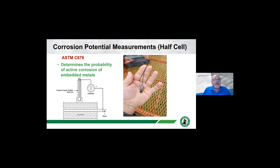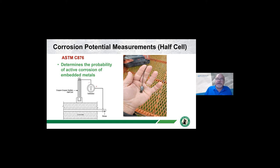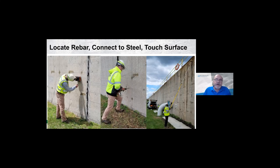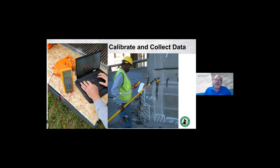I want to talk about corrosion potential measurements, often referred to as half-cell measurements—ASTM C876. We have to make a positive connection to the black steel, so we drill and chip and expose where the rebar is. In the image on the right is our positive connection with a wire to the rebar. Then we touch the surface of the concrete with a copper copper-sulfate half-cell sponge, which is a little bit wet. We lay out a grid system—maybe two feet by two feet. The process: locate the rebar with GPR, drill to the steel to make a connection without damaging it, make the positive connection, touch the surface, and record these measurements, calibrating and collecting data over the whole area of the concrete member.